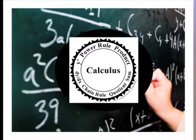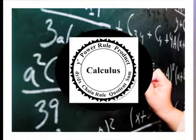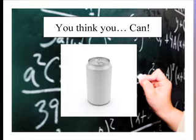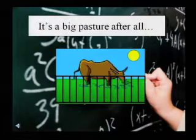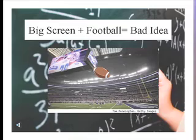We can use calculus to determine optimum values — maximums and minimums. Given some information, you can find the smallest amount of material to make a can of a certain volume, or find the largest area of land that can be enclosed by a certain amount of fencing.